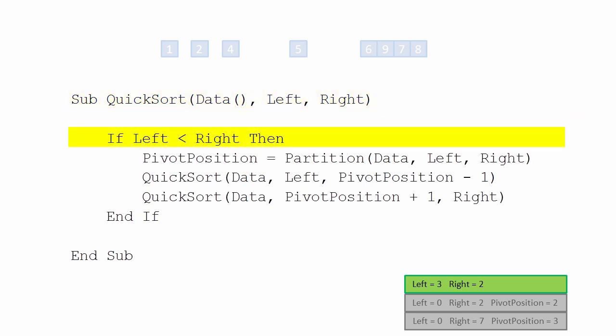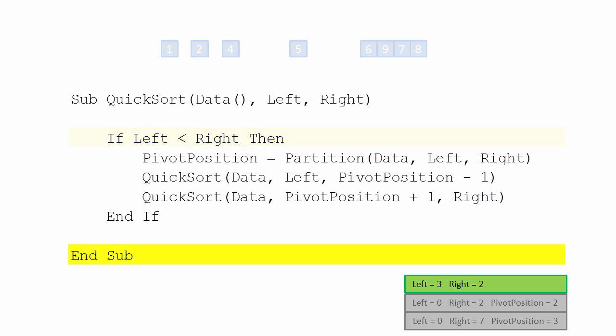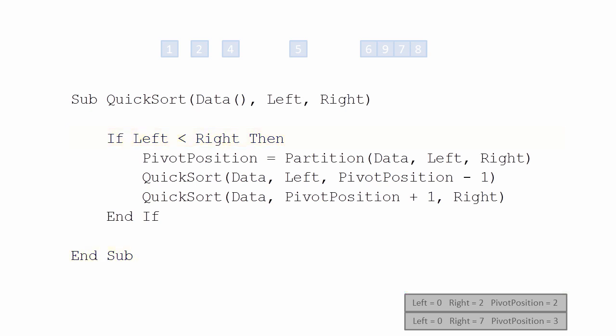Because the value of the left pointer exceeds that of the right, there is no sublist to work with, so another instance of quicksort ends, handing control back to its caller. But the second invocation has also finished its work, so it too can come off the stack.